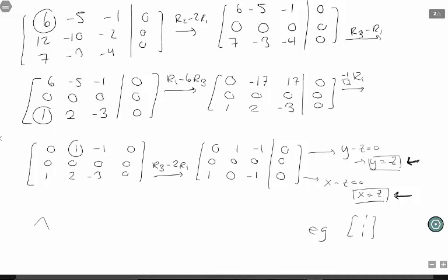We found our first eigenvalue-eigenvector pair. When I let 4 be my first eigenvalue, I can let my corresponding eigenvector be 1, 1, 1.